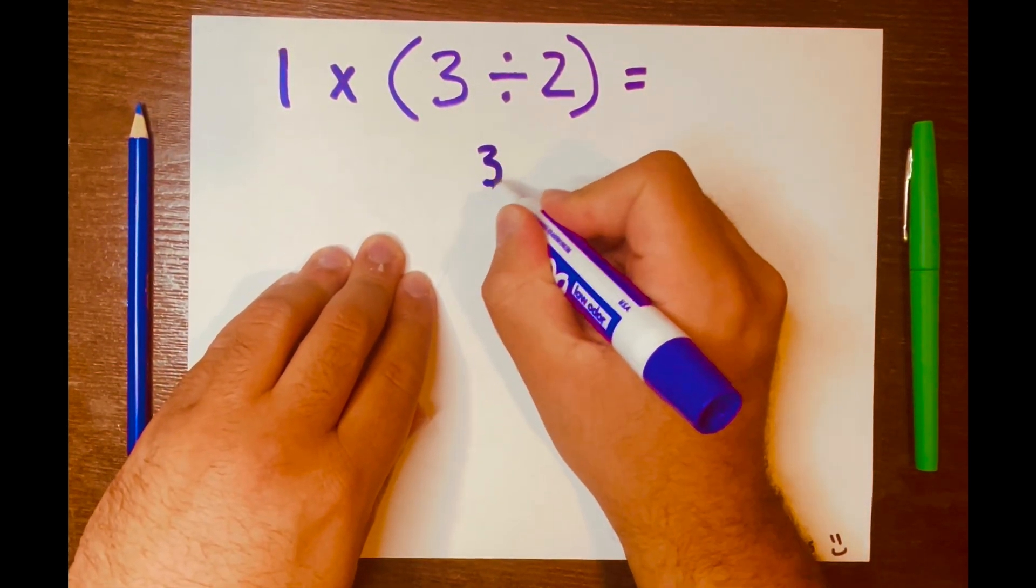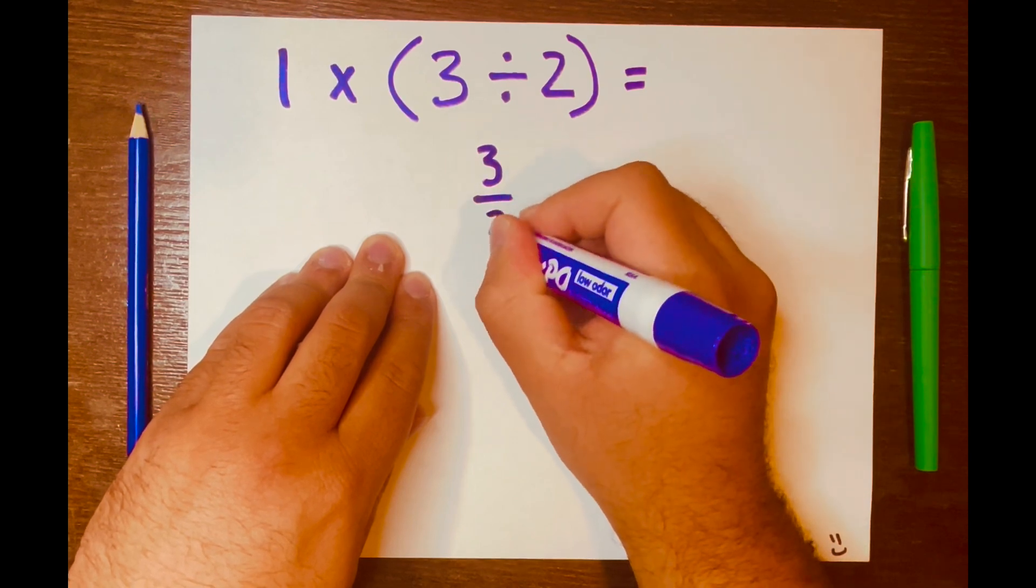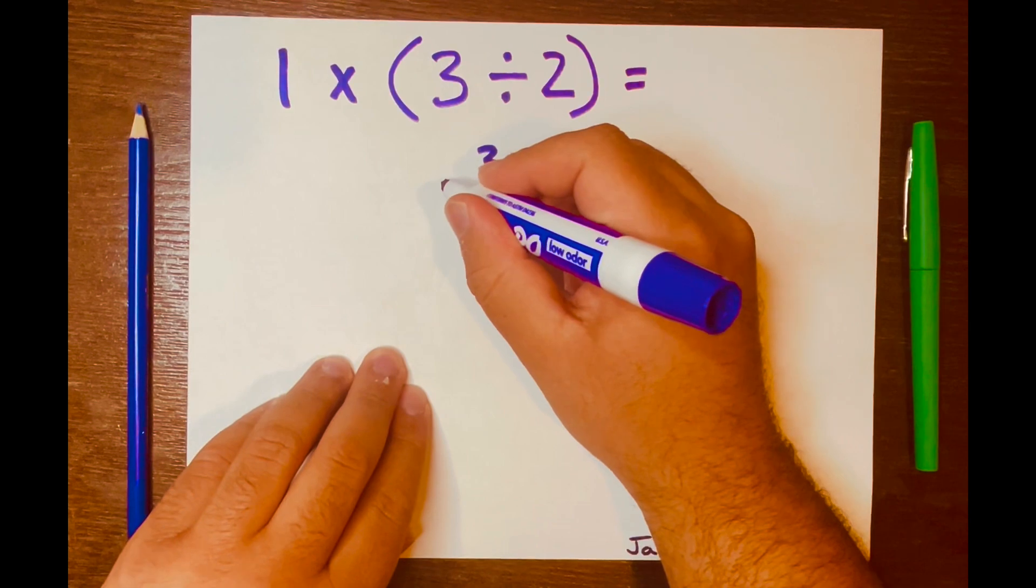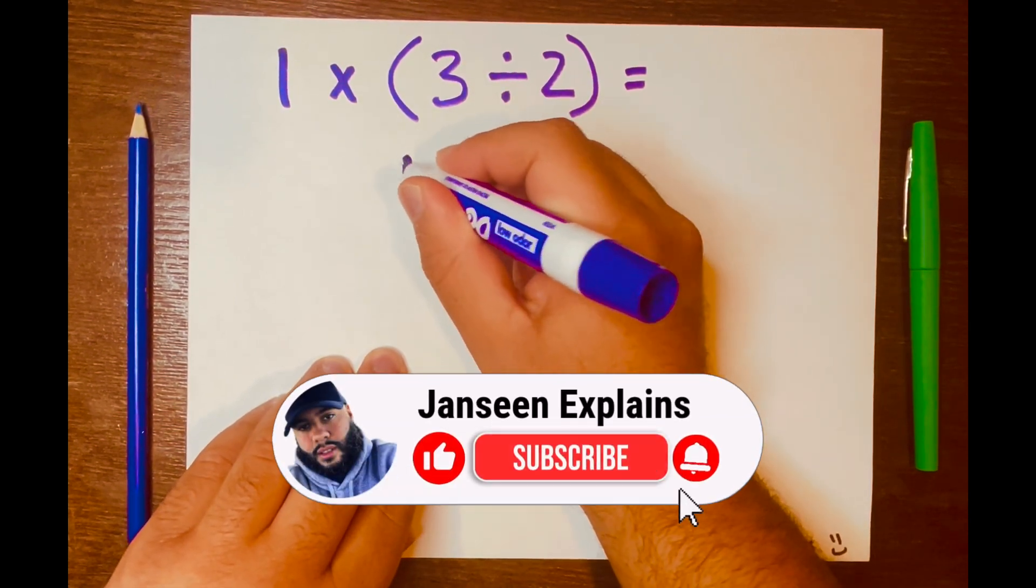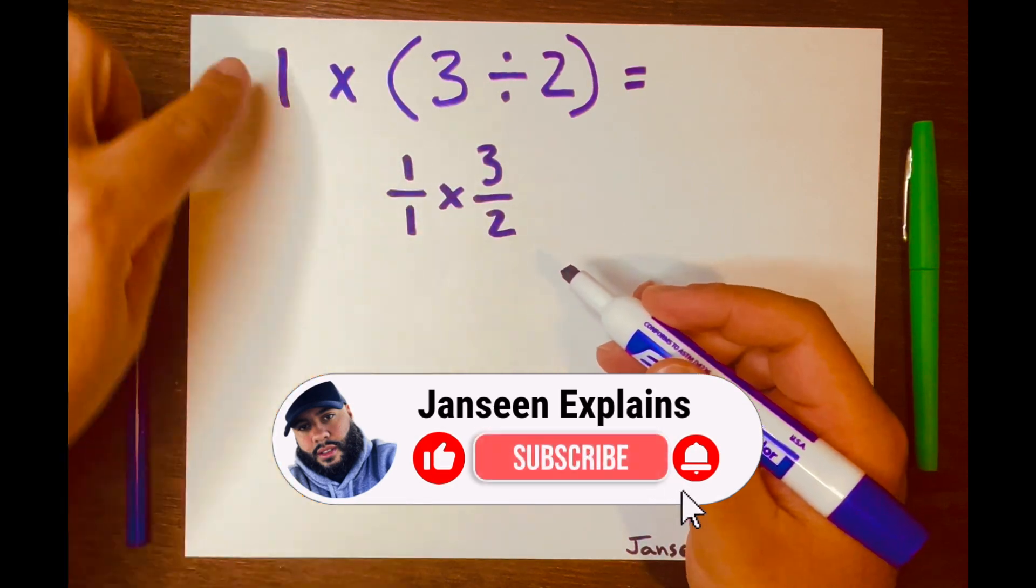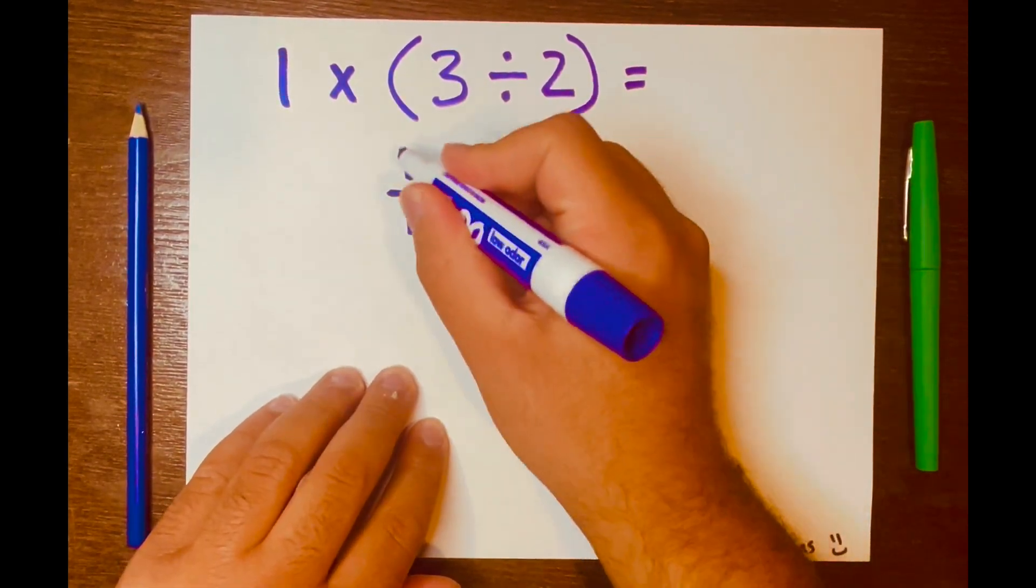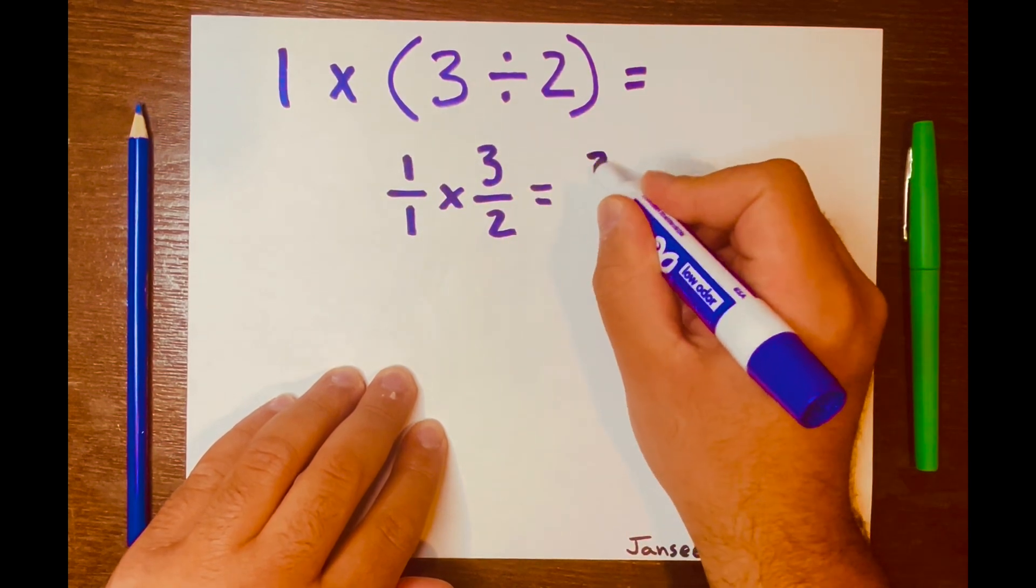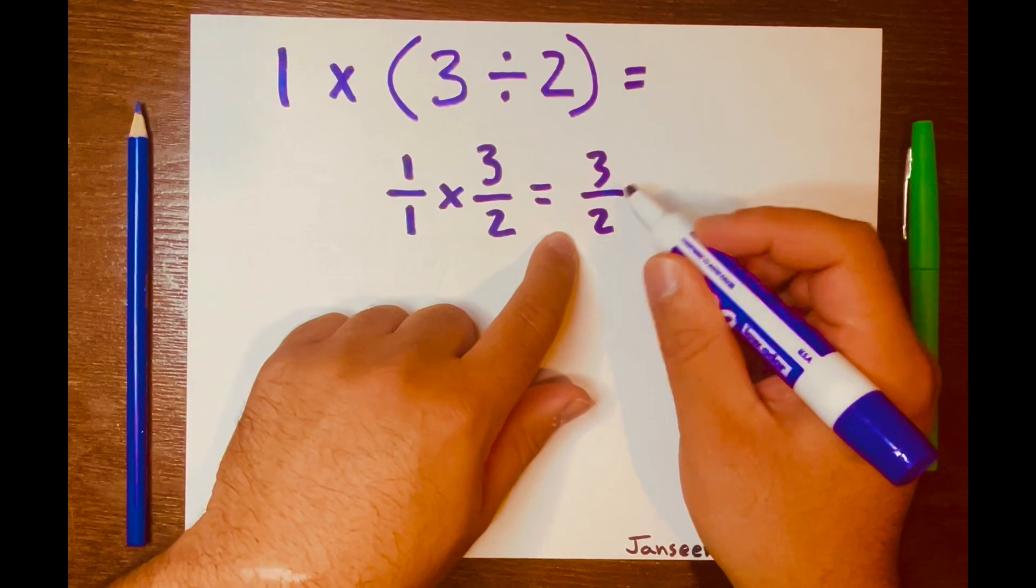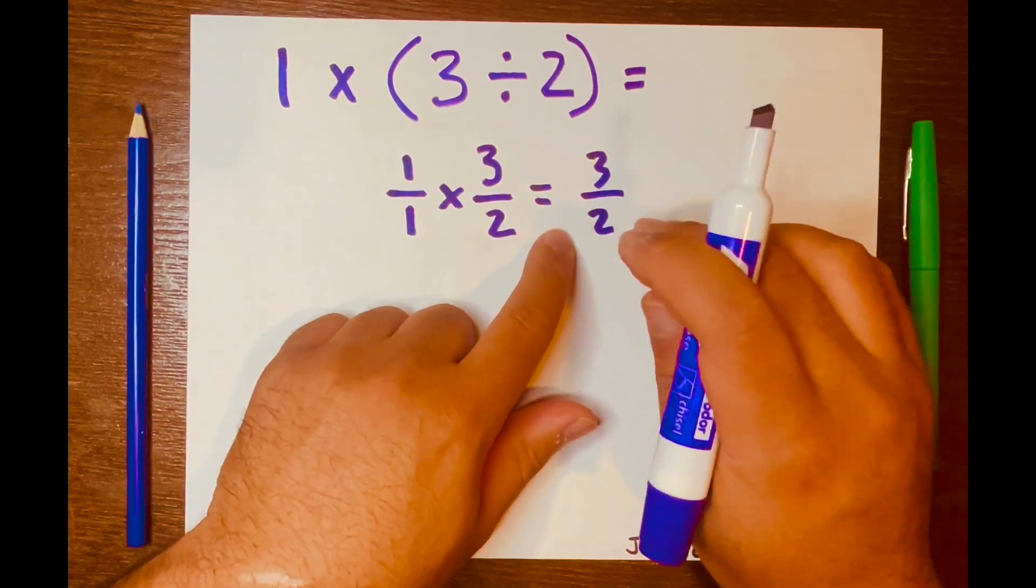I'm going to write this as a fraction, then bring down the multiplication symbol and the 1. I'll turn the 1 into a fraction - 1/1 equals 1, doesn't change the value. Then multiply across: 1 × 3 = 3, 1 × 2 = 2. This cannot be broken down further, so this is it.